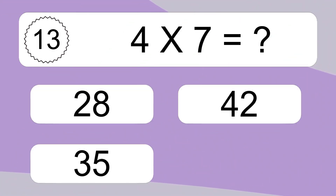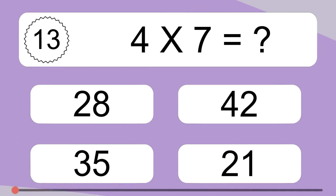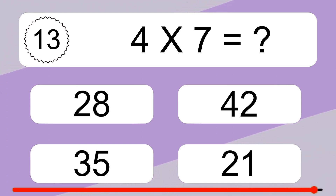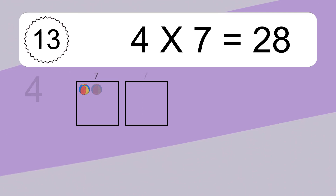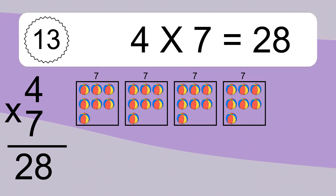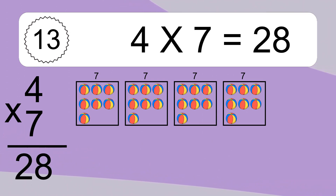4 times 7 equals what? We have 4 boxes, and each box has 7 colorful balls inside. If you count all the balls in all the boxes together, you will have 4 times 7 balls. This equals 28 balls.